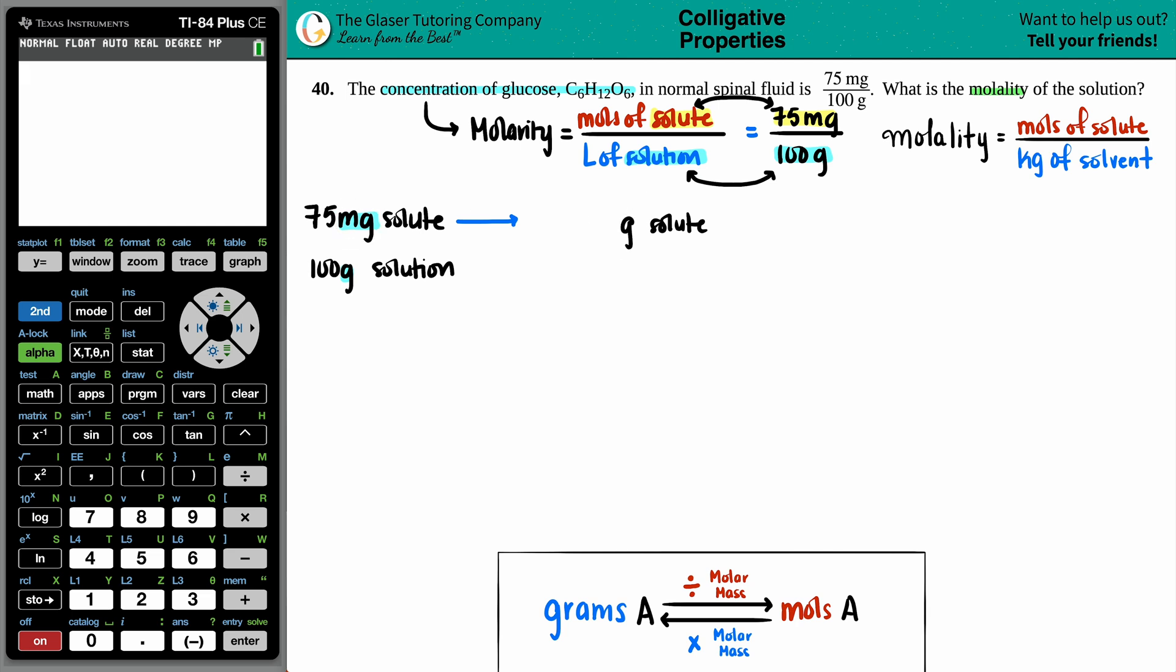Milligrams to grams, this is going all the way back to basics. Milligrams to grams, all you have to do is just divide by 1,000. Similarly, you could take your decimal and move it to the left three times. So this would be the same as saying I have 0.075 grams.